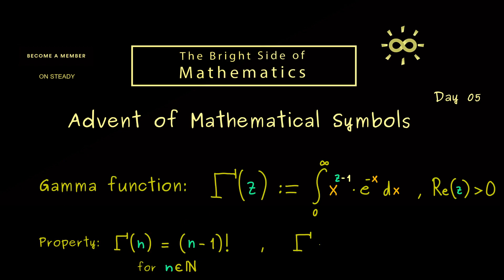This becomes more apparent when we prove a similar recursive formula: gamma of z plus 1 equals z times gamma of z.